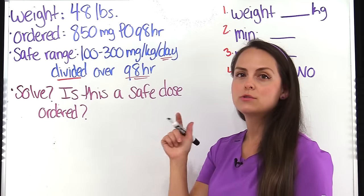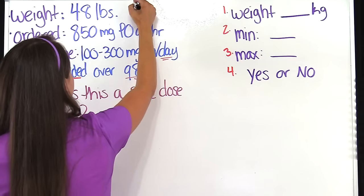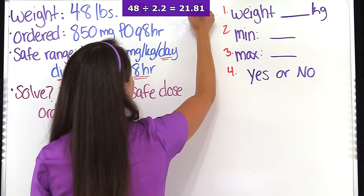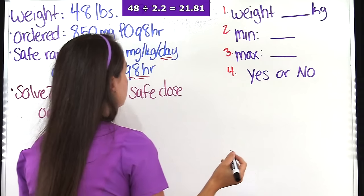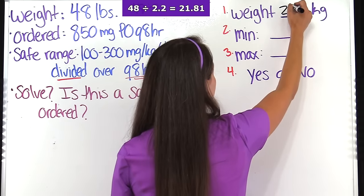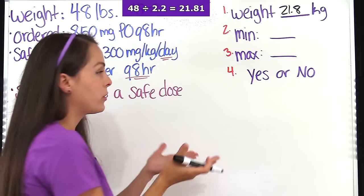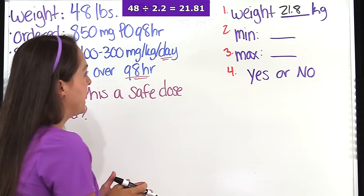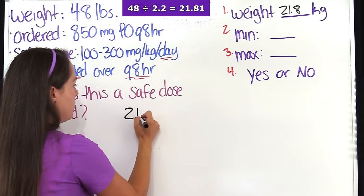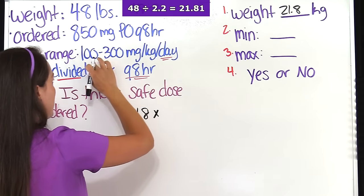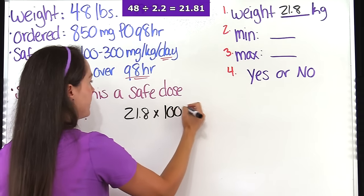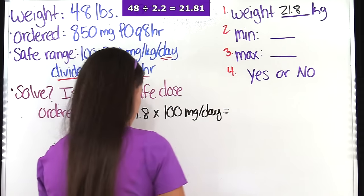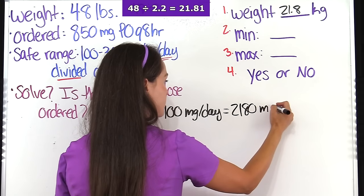We know one kilogram equals 2.2 pounds, so we take 48 divided by 2.2, which gives us 21.81 repeating. Rounded to the nearest tenth, our patient weighs 21.8 kilograms. Now we solve for the minimum dose using our formula: 21.8 kilograms multiplied by the minimum range of 100 milligrams per day gives us 2,180 milligrams per day.